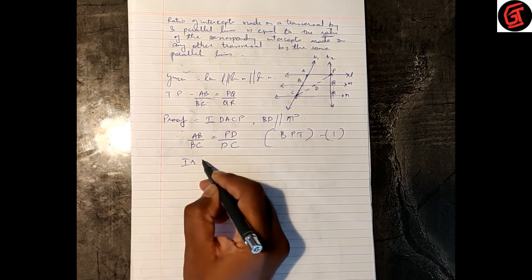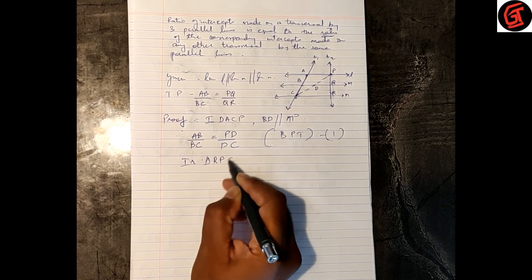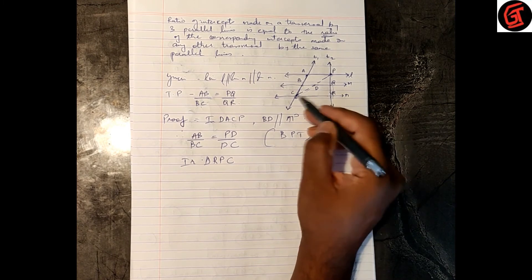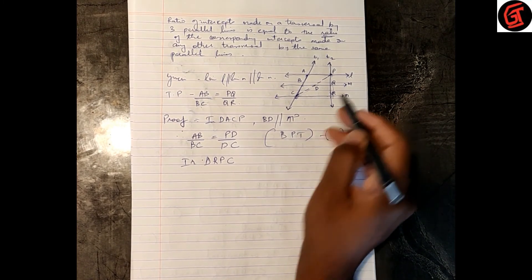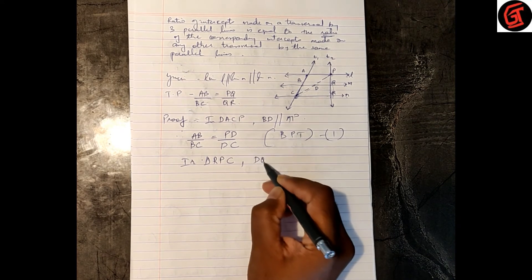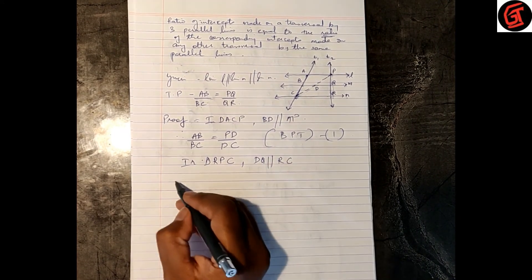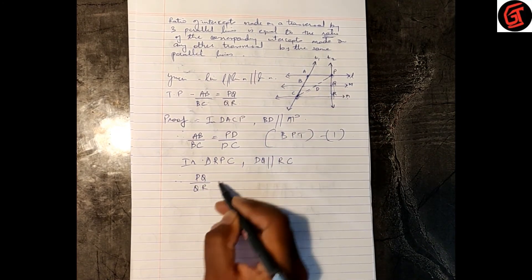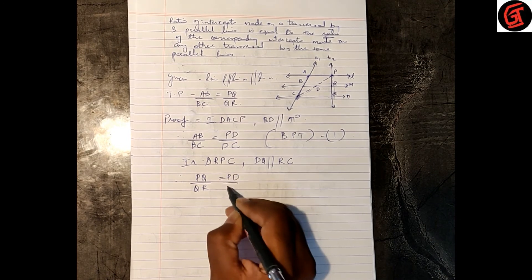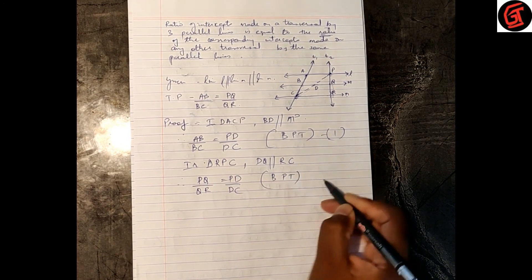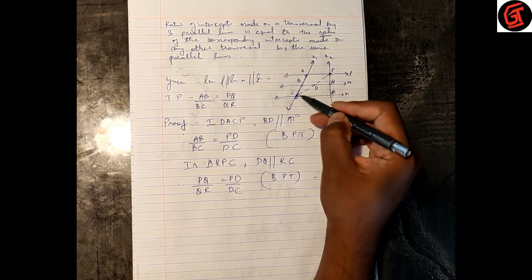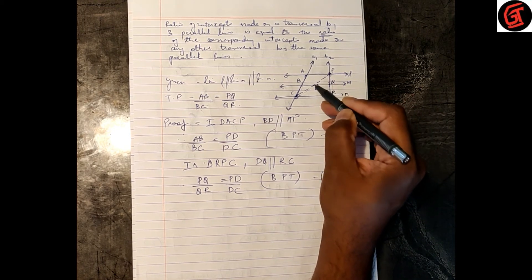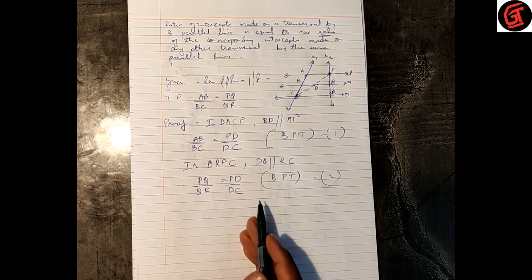In triangle RPC, DQ is parallel to RC because line M is parallel to line N, which is given. So by the Basic Proportionality Theorem, PQ upon QR is equal to PD upon DC. Let this be statement 2.